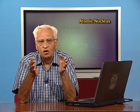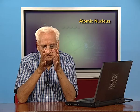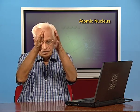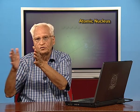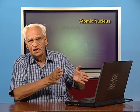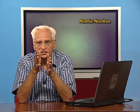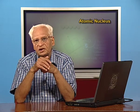In the next lecture, we shall continue with the stability of nuclei and see why both protons and neutrons are necessary for nuclear stability. We shall also discuss radioactivity, including mean life and half-life. In this lecture, we concentrated on the binding energy per nucleon, which helps us understand where nuclei are more stable. Heavy nuclei break into smaller ones approaching the stable band, while light nuclei combine to become more stable.